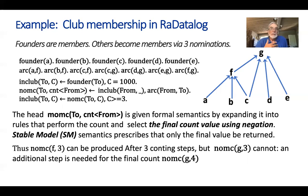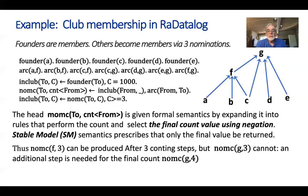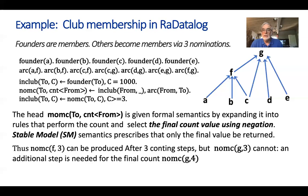The problem is not performing the incremental counting — the semantic problem is that stable model semantics requires that from the second rule you cannot show any result until you have reached the absolute final maximum result. So in our execution, A, B, C give F a count of three, and that's fine — you can show F with a count of three. But for G, having D and E giving a count of three, you cannot propagate to the next stable level. G must wait until F also issues its nomination, whereby G gets its final count of four.